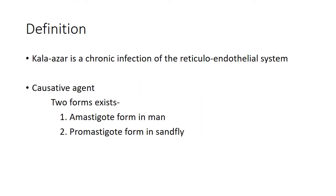Kala-azar is a chronic infection of the reticuloendothelial system characterized by irregular fever of long duration, large spleen and liver, anemia, leucopenia, and progressive emaciation.